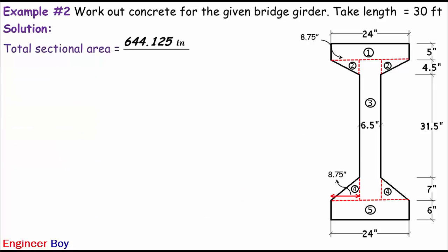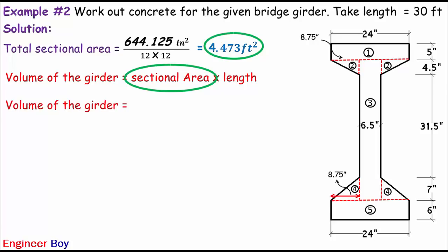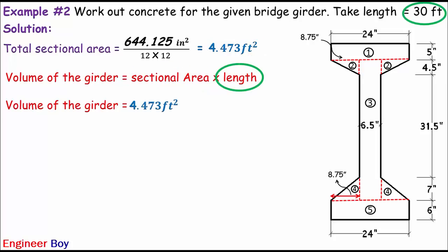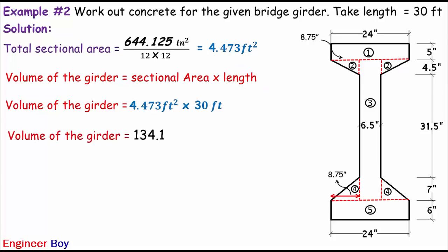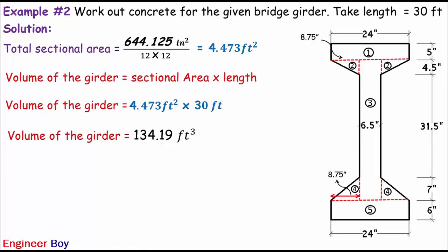Now, once we have the total sectional area, we can calculate the concrete for the given bridge girder. The volume of the girder equals the sectional area — 4.473 square feet — times its length of 30 feet. Multiplying these gives the volume of the girder, or the concrete work for the given bridge girder, equals 134.19 cubic feet. And that's it — this was simple mathematics showing how to calculate the concrete work for the given bridge girder.